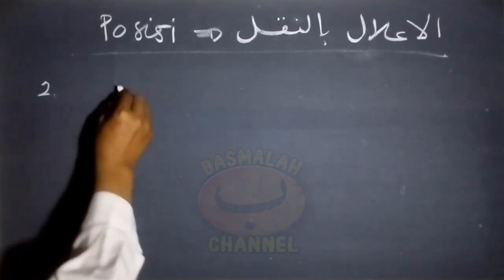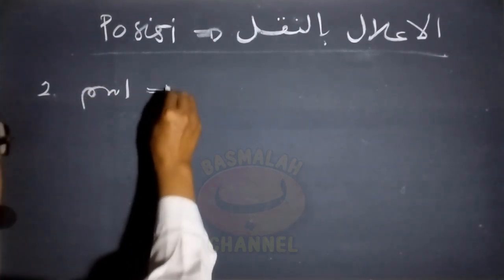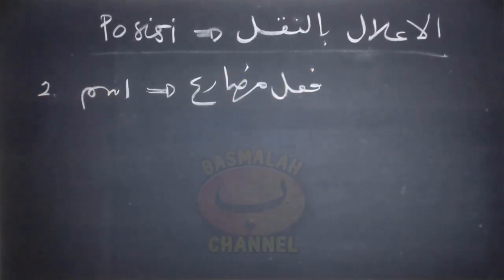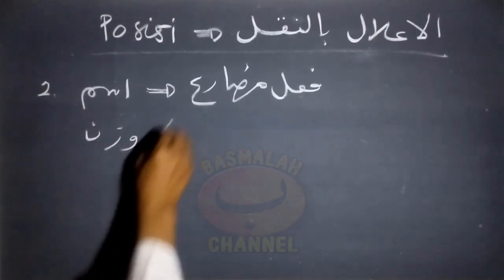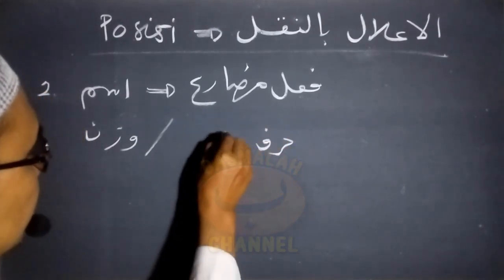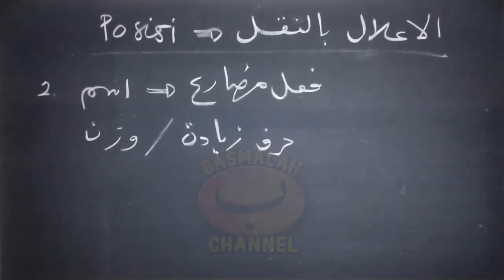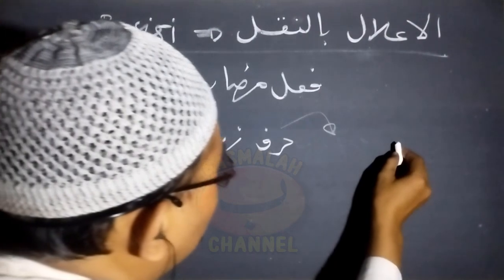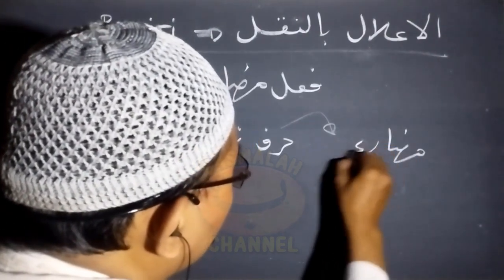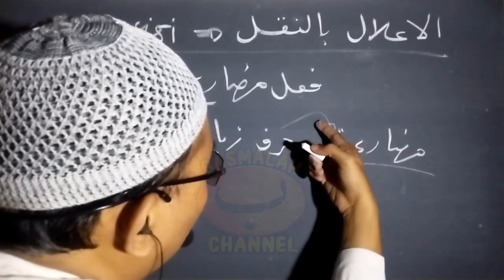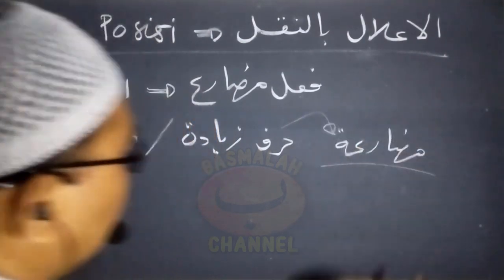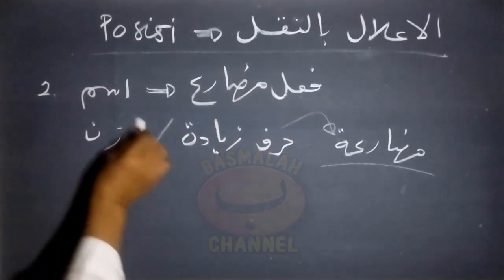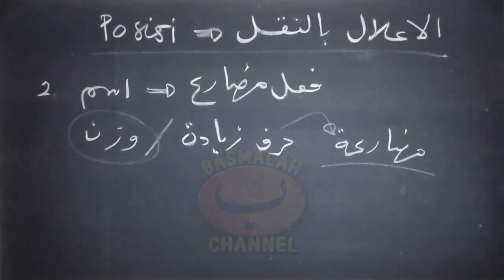Selanjutnya yang kedua, al-i'lal bin naqli tersebut juga terjadi pada kalimat isim yang bentuknya menyerupai fi'il mudore. Keserupaan tersebut baik dalam segi wazannya ataupun dalam segi huruf ziyadahnya atau huruf tambahannya, dimana pada fi'il mudore tersebut terdapat huruf tambahan yang berupa huruf mudore'a yang ada di awal dan huruf-huruf yang ada di tengah dari kalimat tersebut. Contoh untuk kalimat isim yang menyerupai fi'il mudore dalam segi wazannya, seperti lafad mak'uamun.